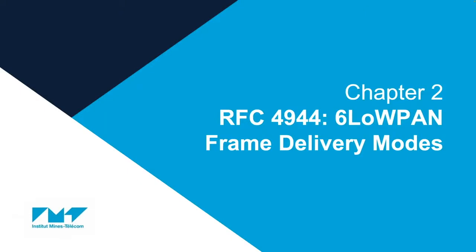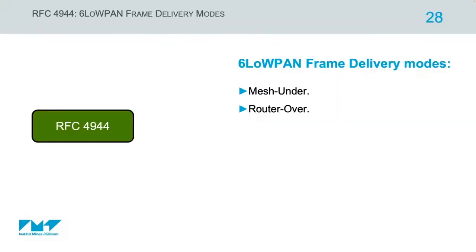This concludes the first part on 6LoWPAN fragmentation and reassembly. We now proceed to 6LoWPAN frame delivery modes. 6LoWPAN defines two frame delivery modes: the mesh under and the route over, also called the per-hop fragmentation and reassembly mode.